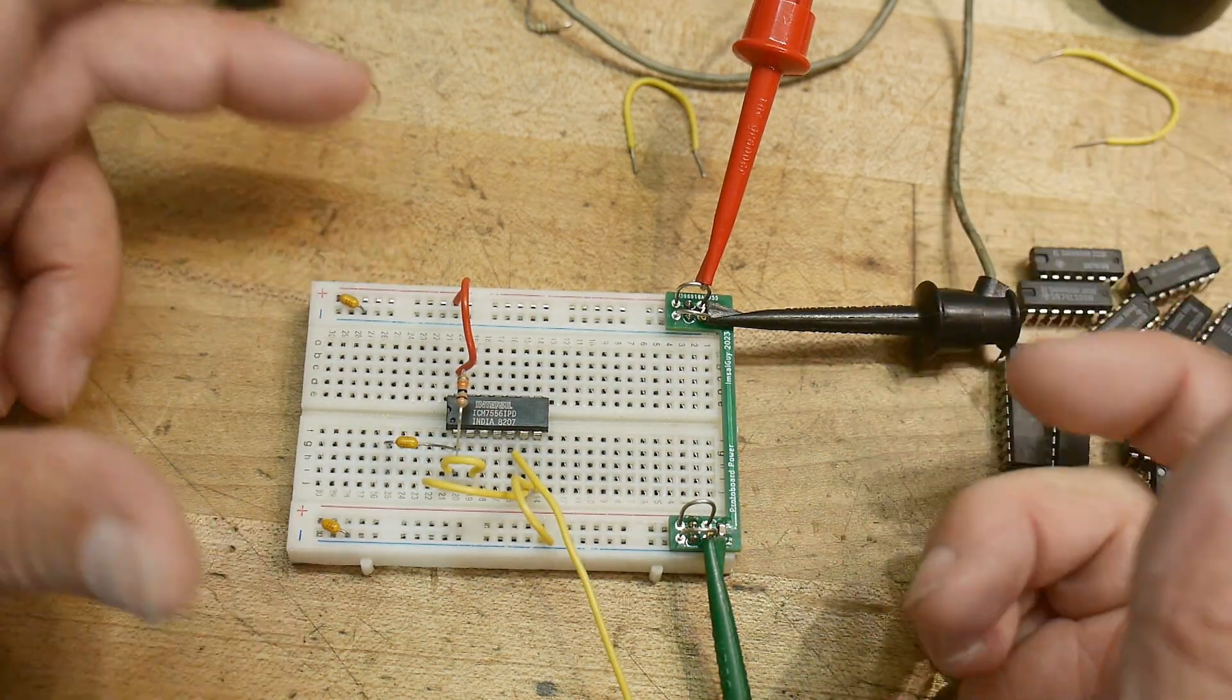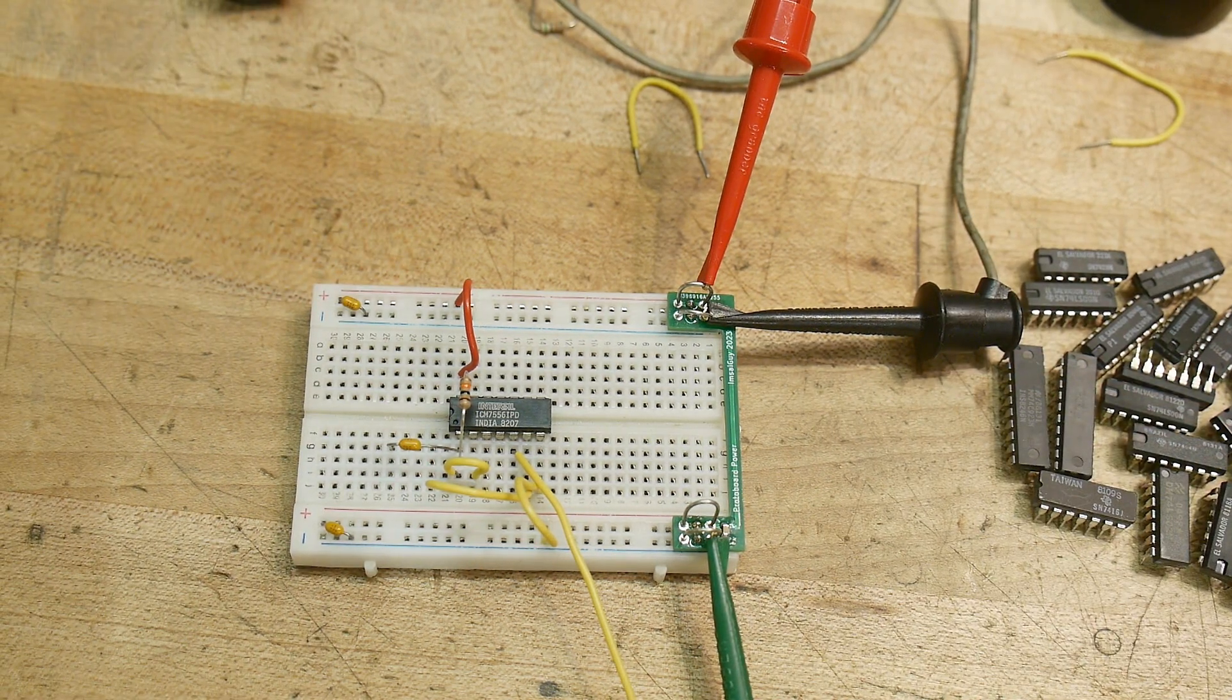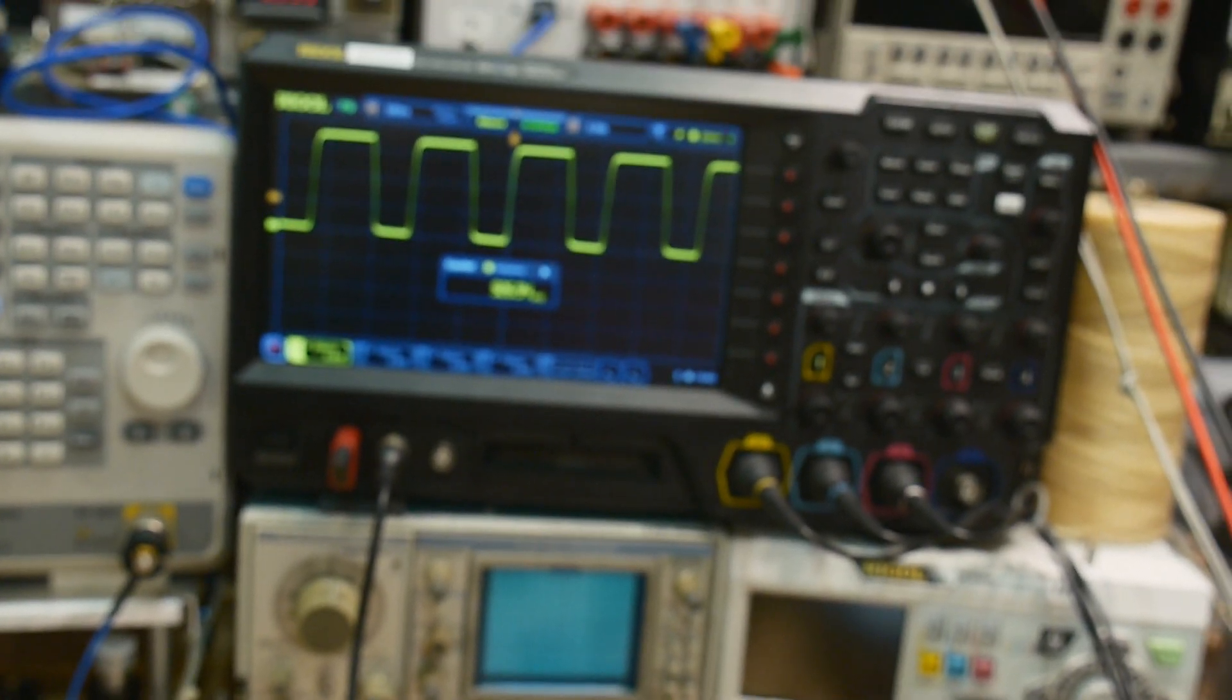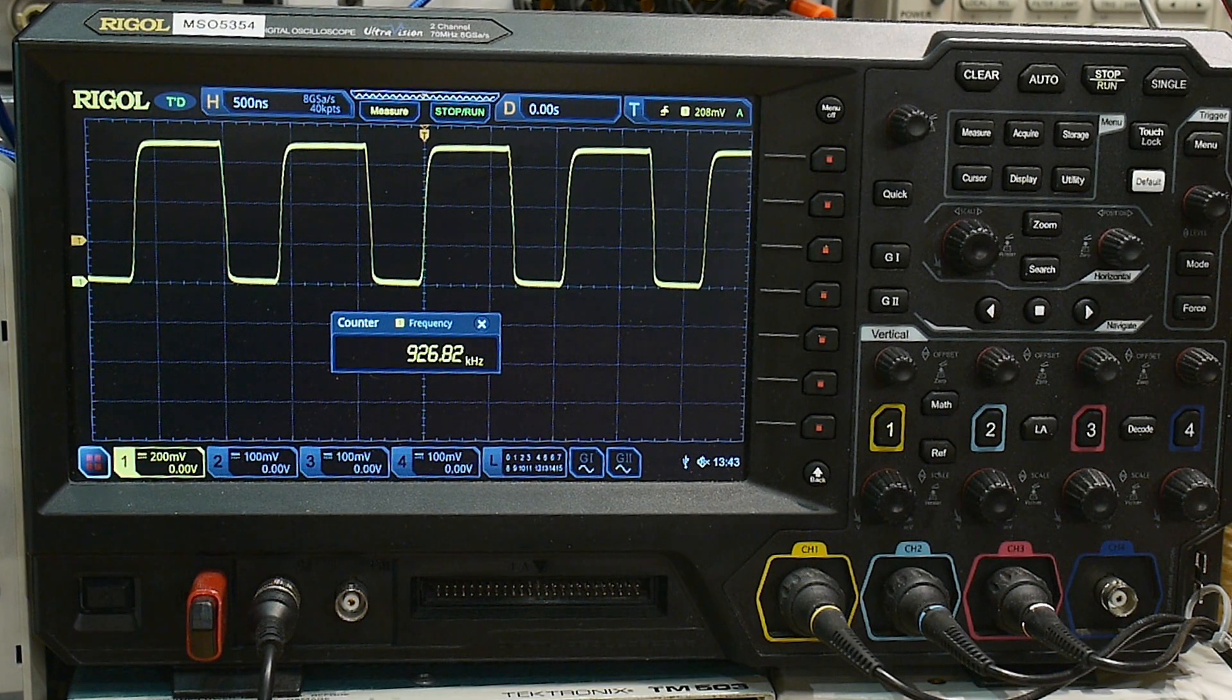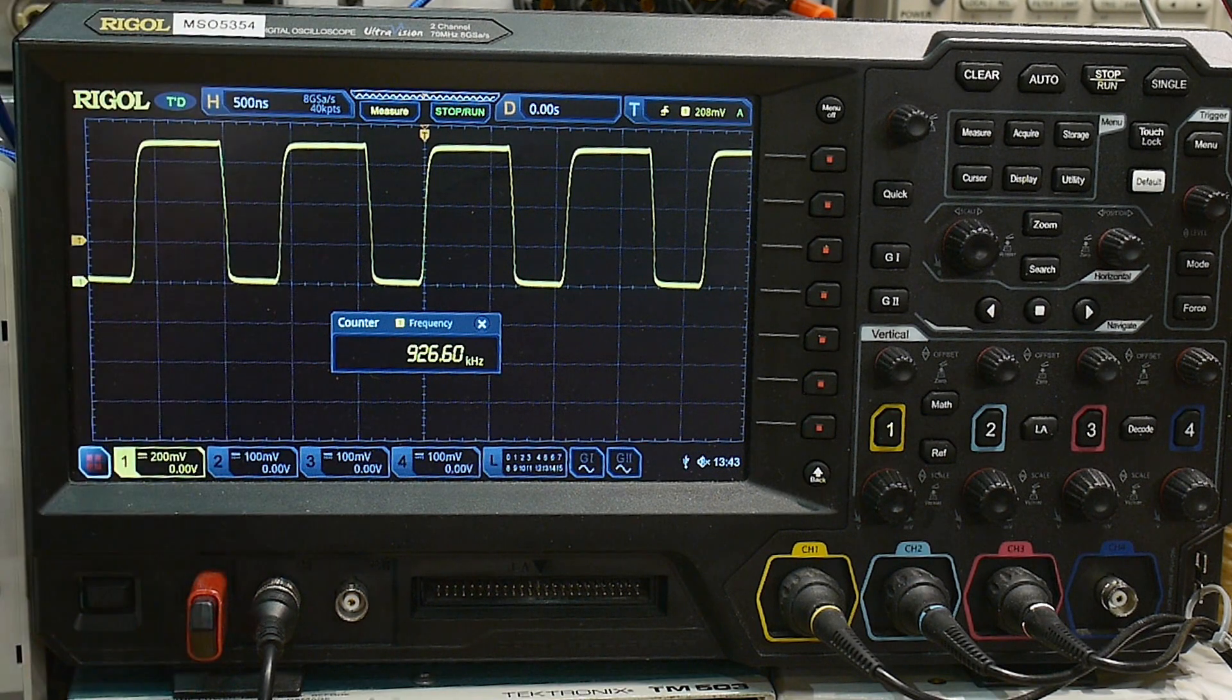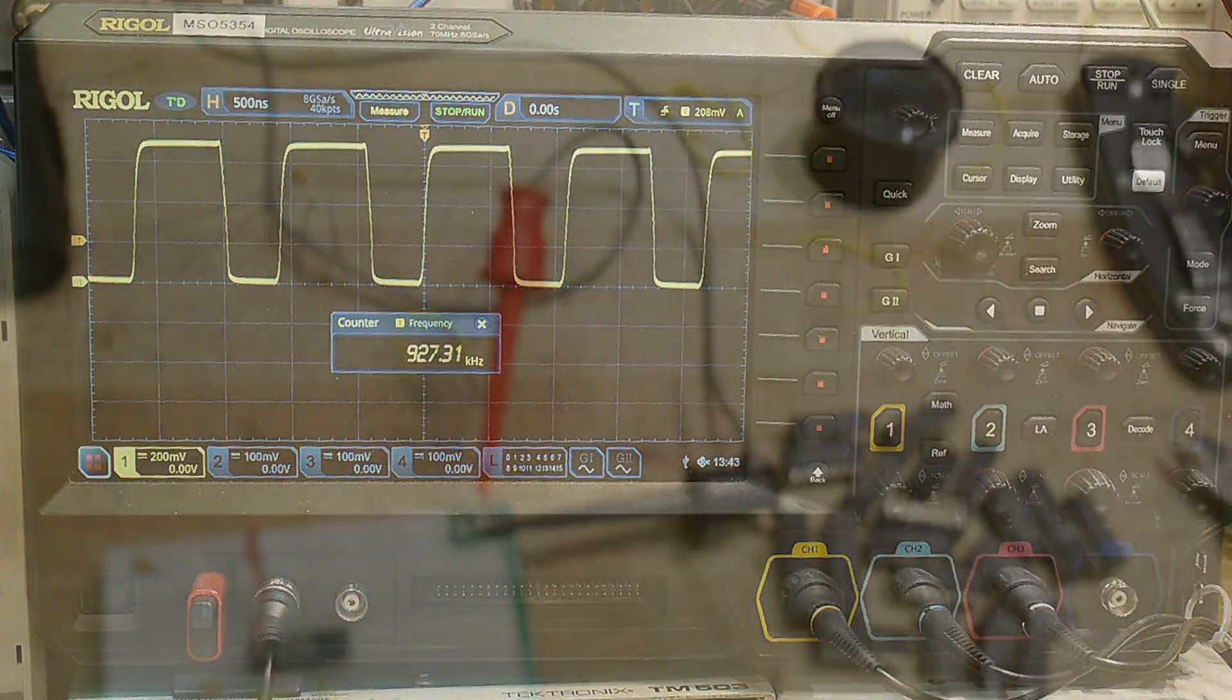So we have seven volts coming in. Doesn't really matter why it's seven volts. That's just what my power supply happens to be set at. And ta-da! It looks like an oscillator. So it goes up and down and up and down and up and down. And those values that I picked at random, 10k and 0.01, ends up being 9.27 kilohertz. There you go.